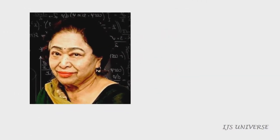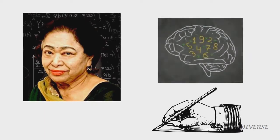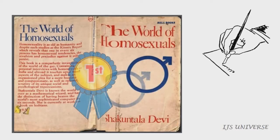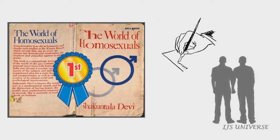Shakuntala Devi was an Indian writer and mental calculator, popularly known as the human computer. She wrote the book, The World of Homosexuals, which is considered the first study of homosexuality in India.